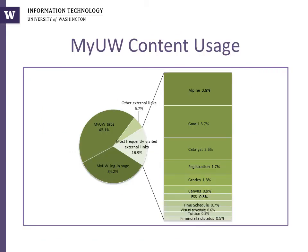Although MyUW contains over 500 external links, nearly three quarters of visits to external links are from a small portion: email, course websites and content, registration resources, grades, employee self-service, a visual schedule of courses, and tuition. This usage trend is the same as the previous year.